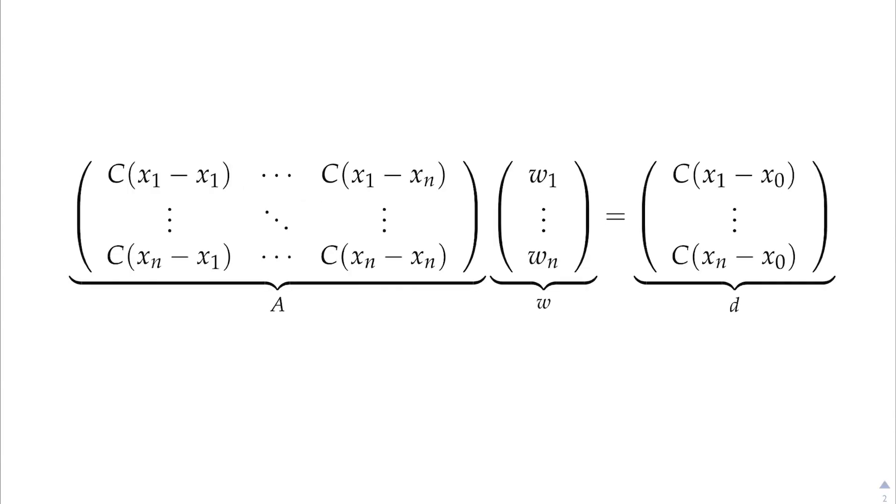So, if we look at the system of equations for simple kriging, we can put all the correct values in the equation. Here, x0 is the interpolated point, x1 to xn are the sample points within its search radius, and w1 to wn are the weights that we give to the value of points x1 to xn. c is the covariance, which is obtained based on the distance between the two points.